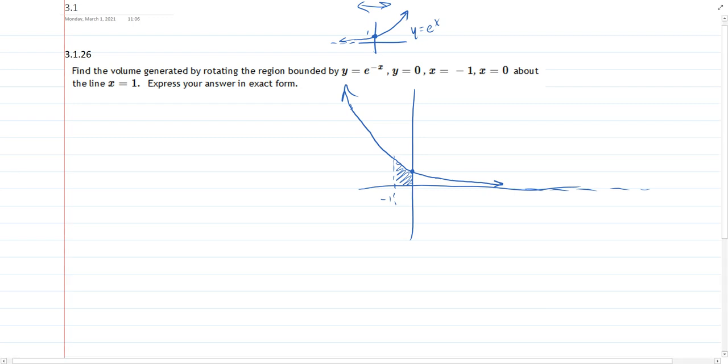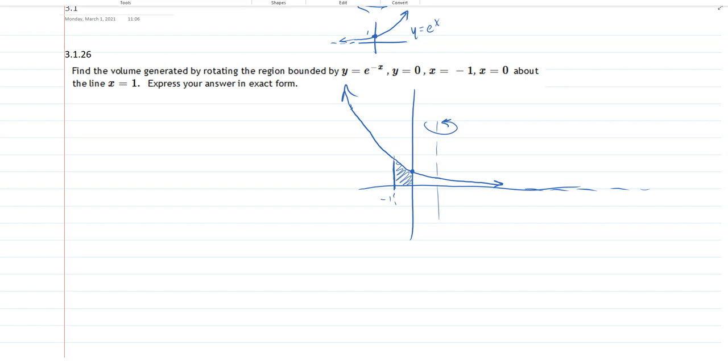Now we rotate that region. We're rotating about the line x equals 1. I should draw this one in solid. So rotating about x equals 1 right here. This is going to be a hollow region. If we do the disk method, we're going to need to account for this hollowness. So we're going to have to subtract out that hollow region. If we do the shell method, it doesn't matter that it's hollow. So let's go ahead and do the shell method.